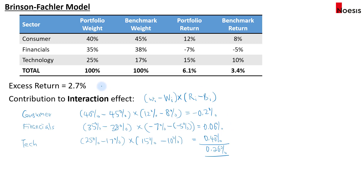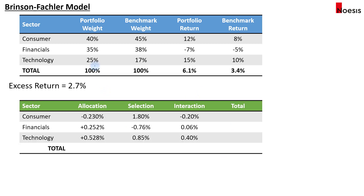Adding up all the computed results: the allocation effect is 0.55%, the selection effect is 1.89%, and the interaction effect is 0.26%. These three sum to 2.7%, which matches exactly the excess return obtained by taking the difference between the portfolio and benchmark returns.